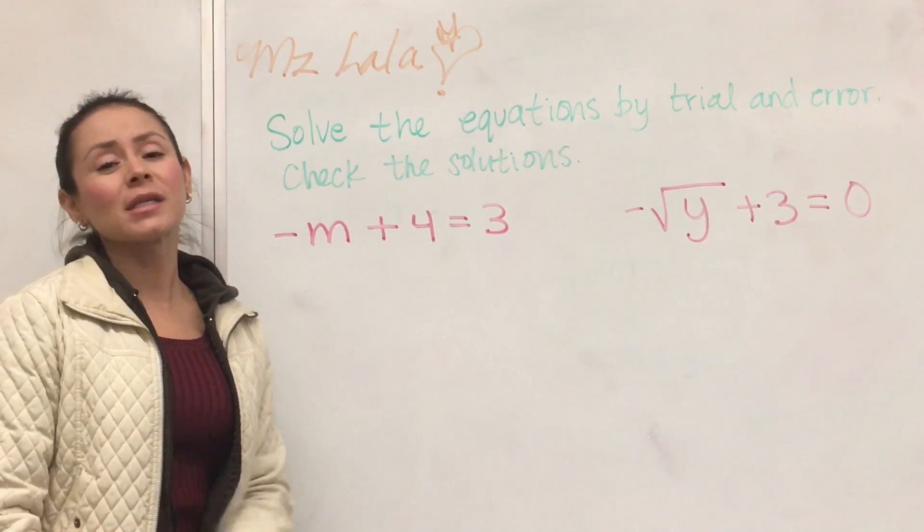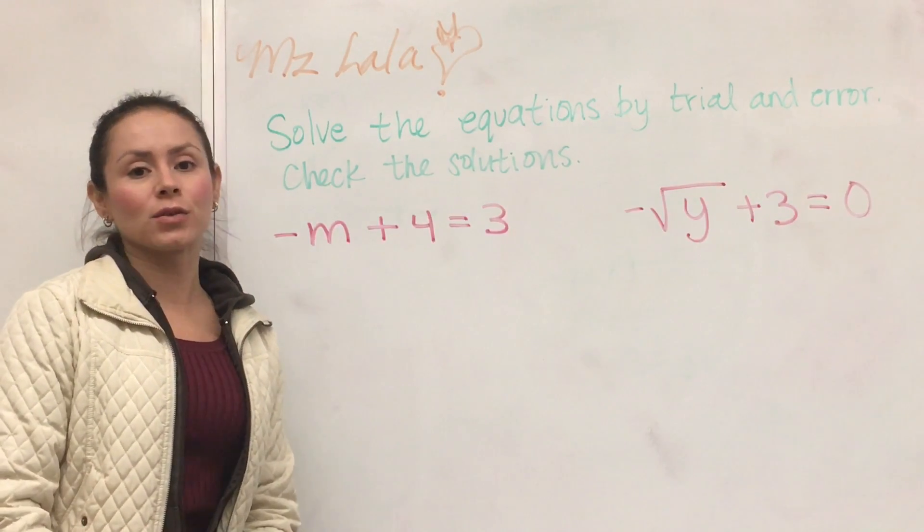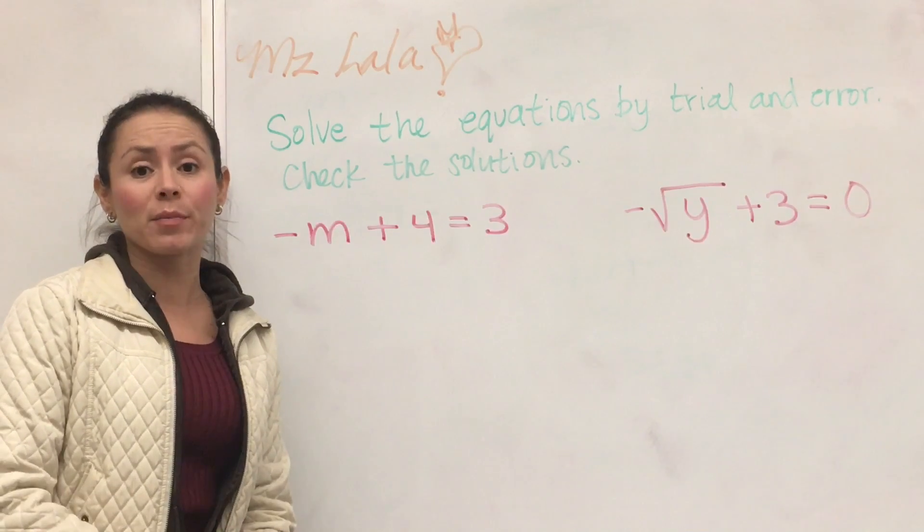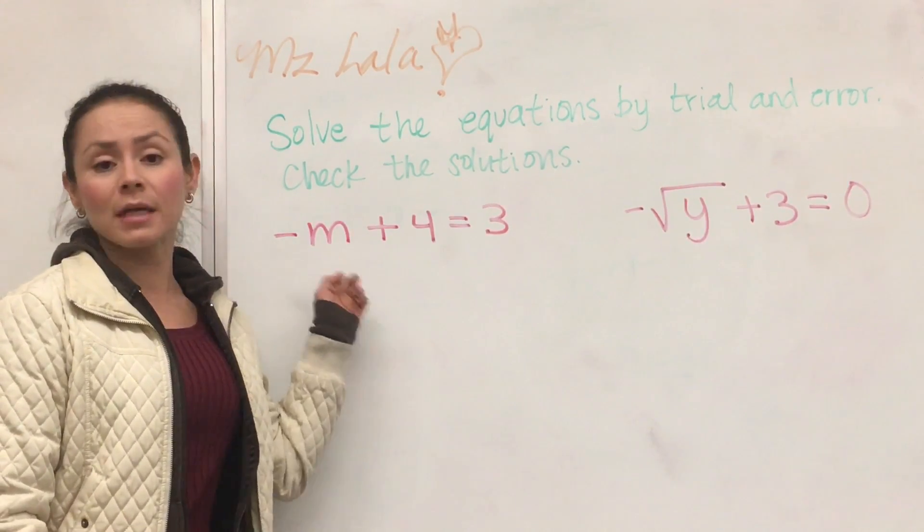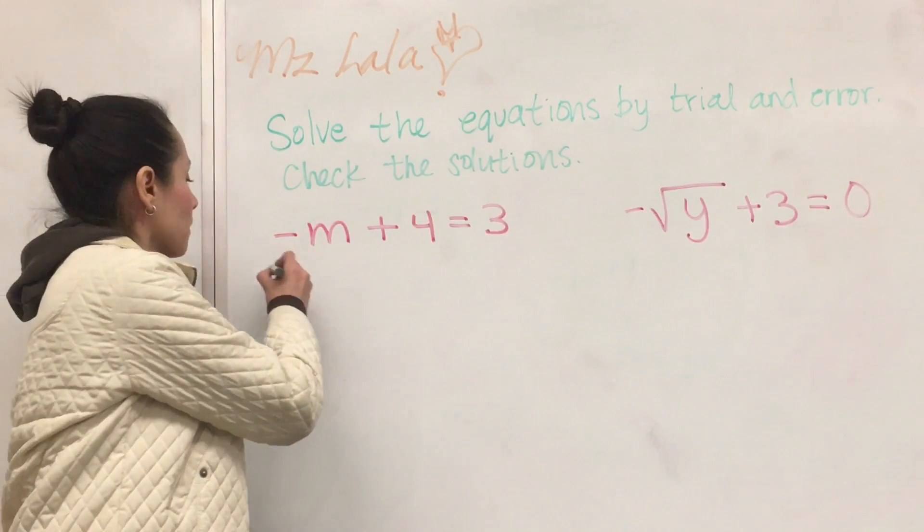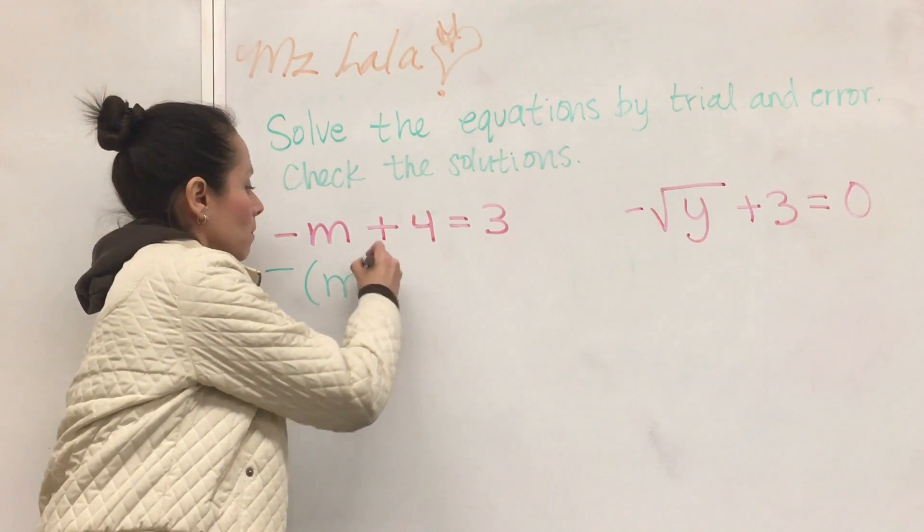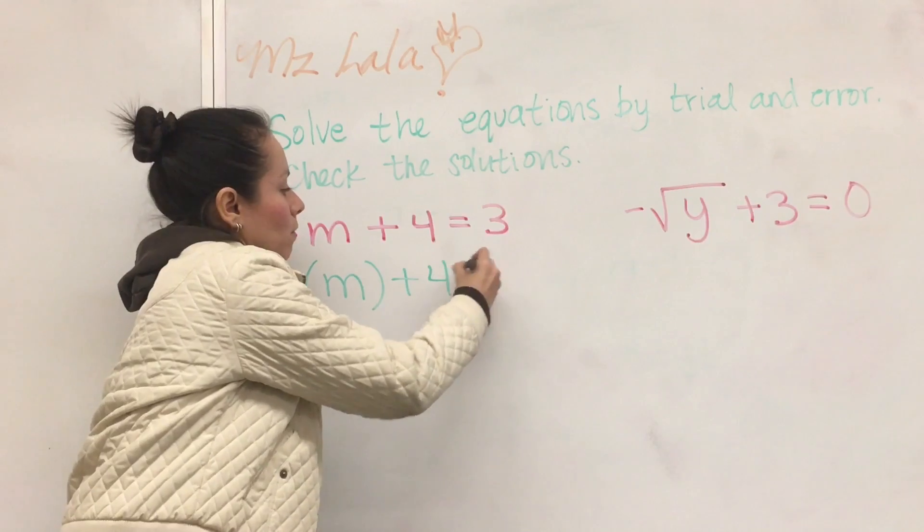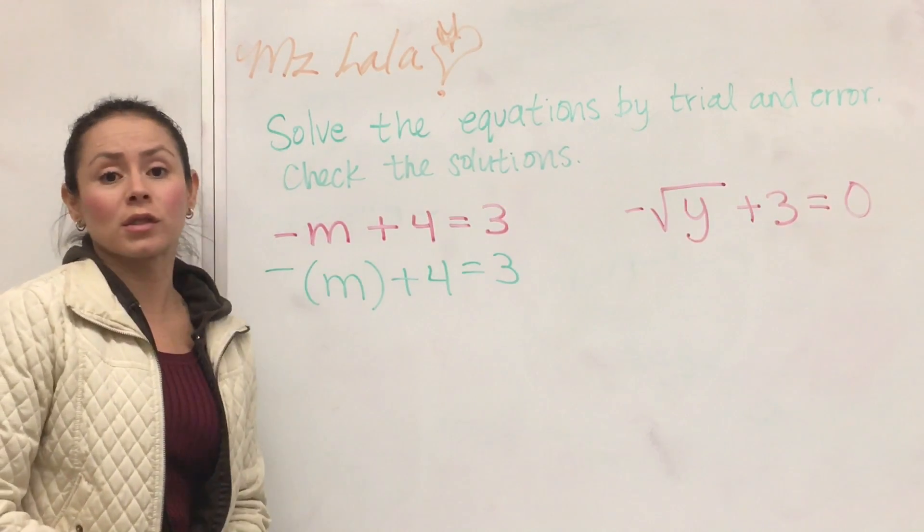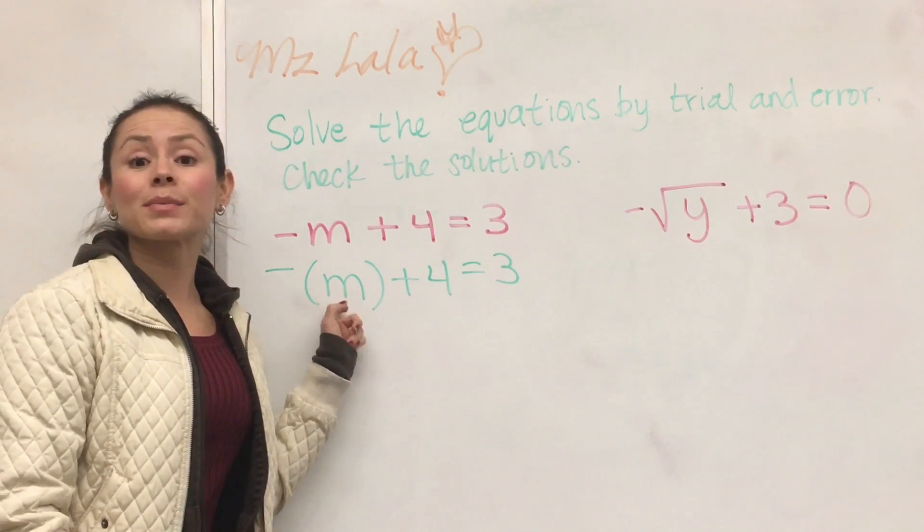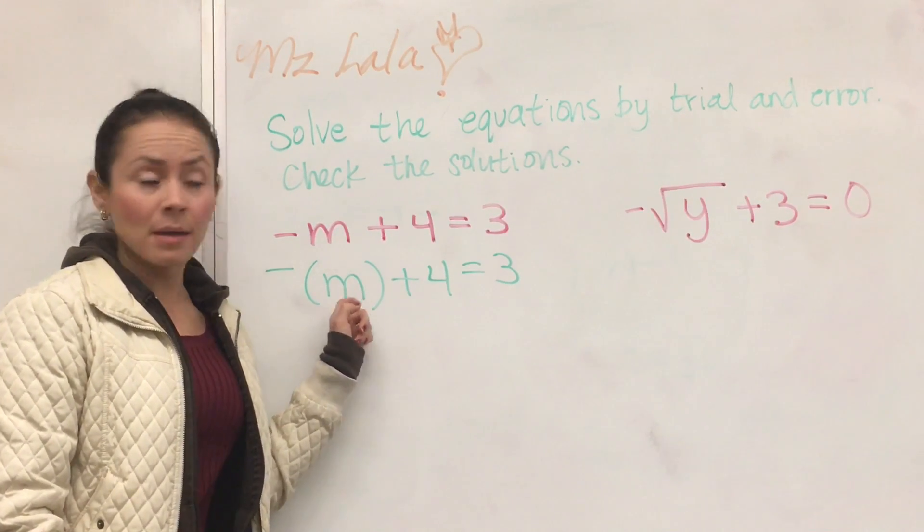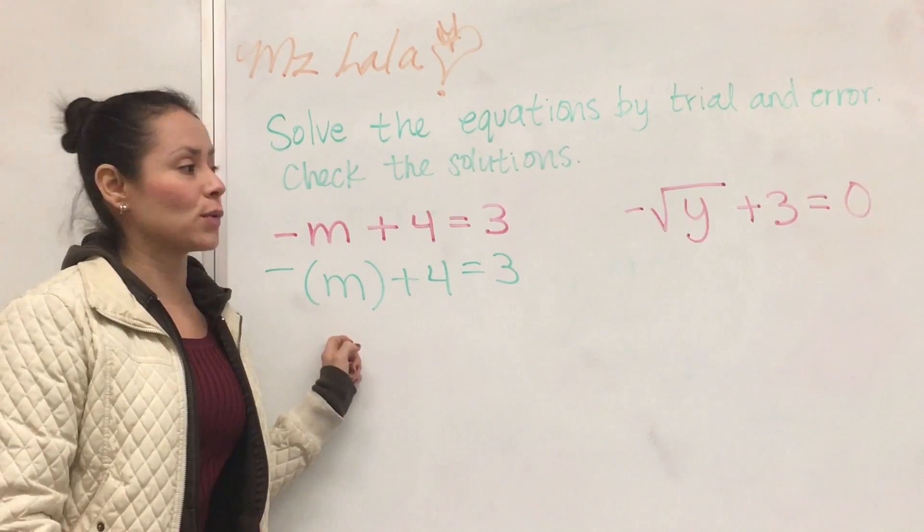So the first thing that I always advise my students is every single time you have variables, always enclose them in parentheses. So my first step for this problem would be to enclose that variable in parentheses because now it's more clear to see that we're going to substitute something into m, not into negative m, into m.